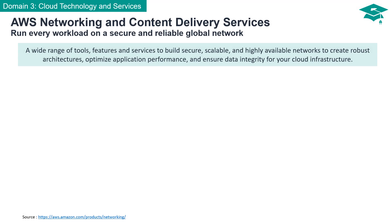AWS Networking and Content Delivery Services offer a wide range of tools, features, and services to build secure, scalable, and highly available networks to create robust architectures, optimize application performance, and ensure data integrity for your cloud infrastructure. Let's take a high-level overview of AWS services related to networking and content delivery.